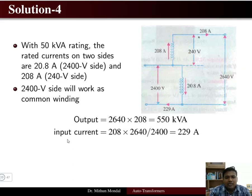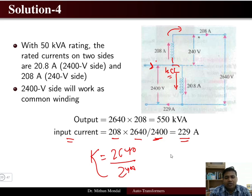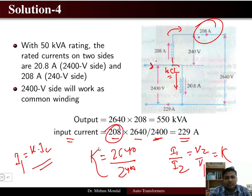The input current can be determined using KCL: I1 = k × I2 = (2640/2400) × 208 = 229 ampere. The transformation ratio k = 2640/2400 = 1.1, and the relationship I1/I2 = V2/V1 = k confirms the primary current of 229 ampere. The common winding current is 20.8 ampere.